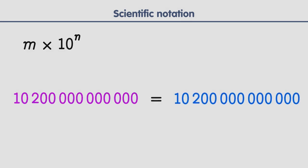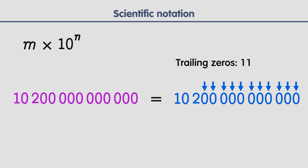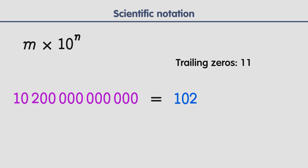Let's look at another example. We count the number of trailing zeros — it has 11 trailing zeros. Then we delete all those zeros, leaving the number 102. Finally, we multiply it by 10 raised to the power of 11, the number of trailing zeros we deleted.